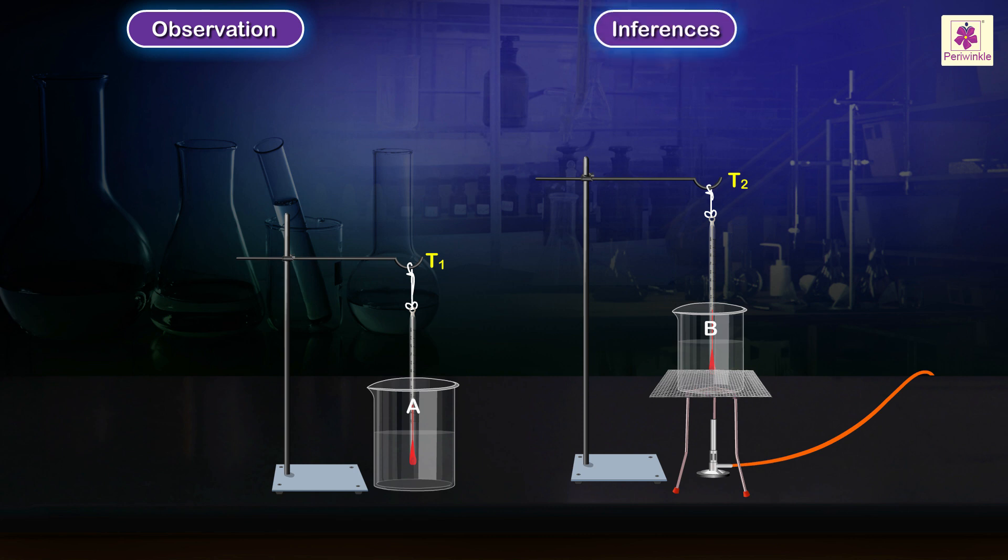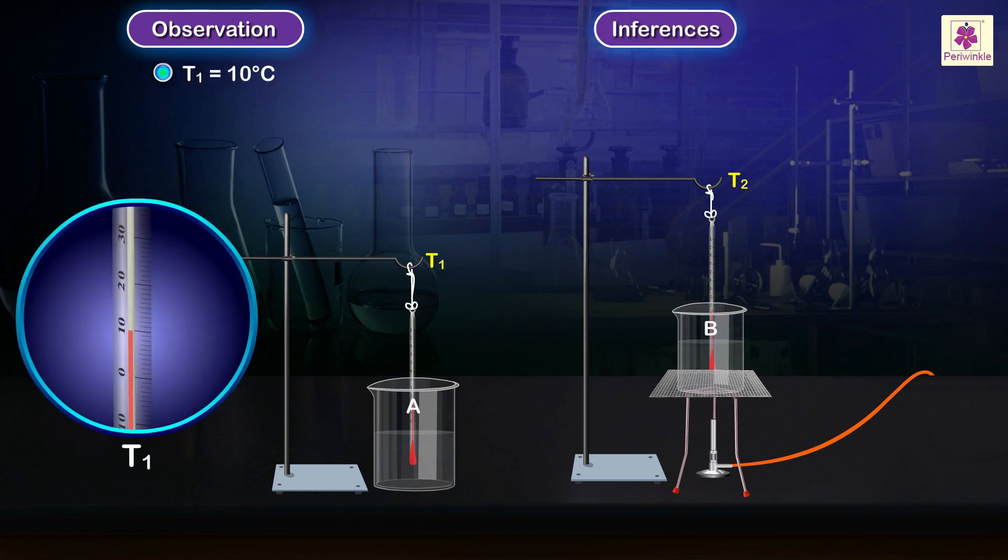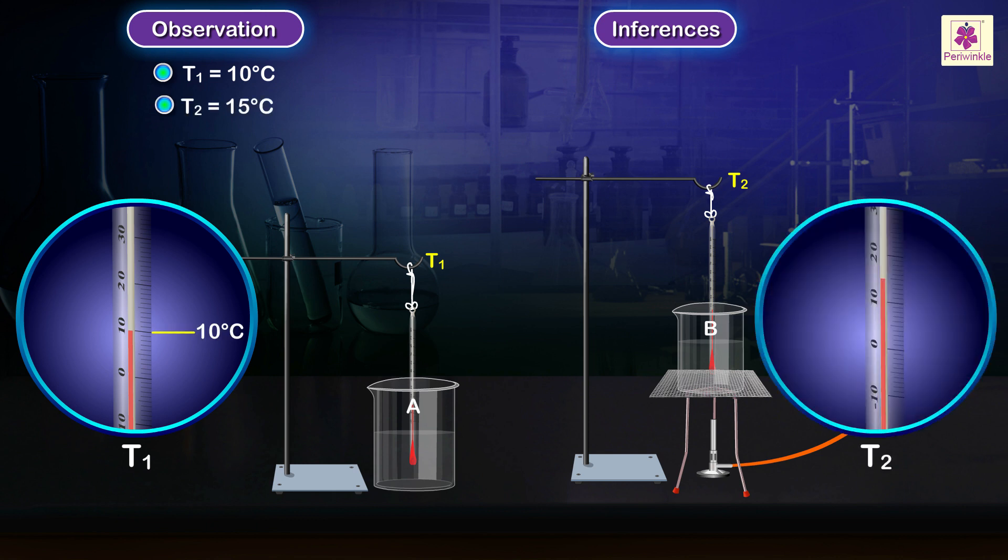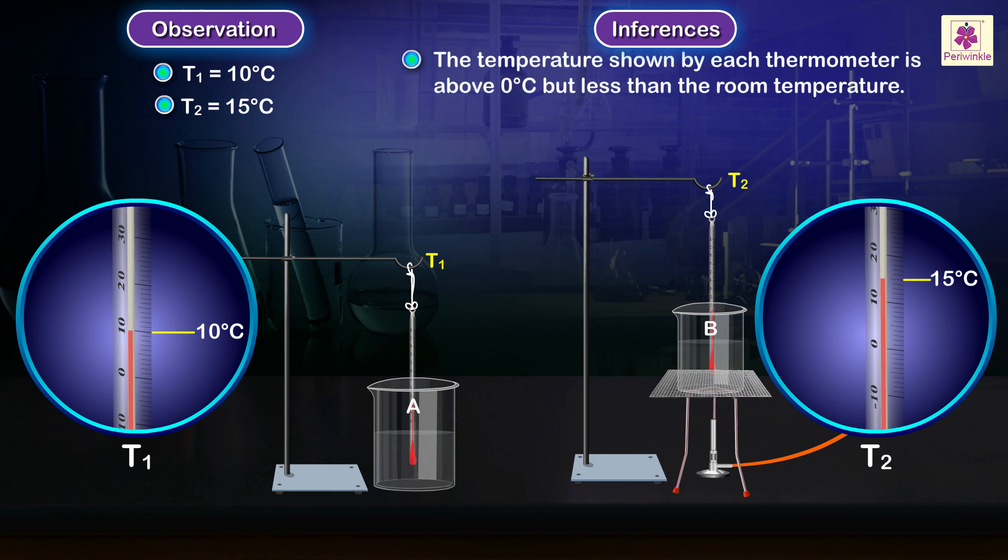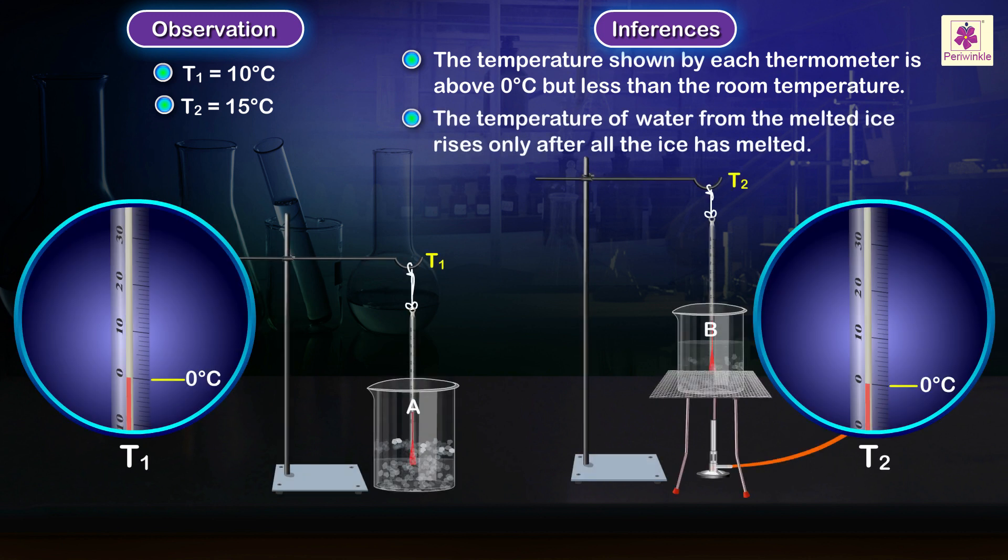D3 is above 0 degrees Celsius but less than the room temperature. The temperature of water from the melted ice rises only after all the ice has melted.